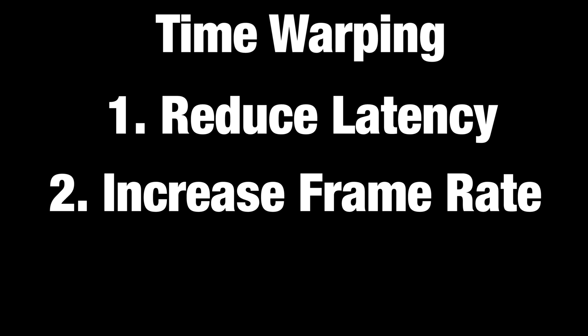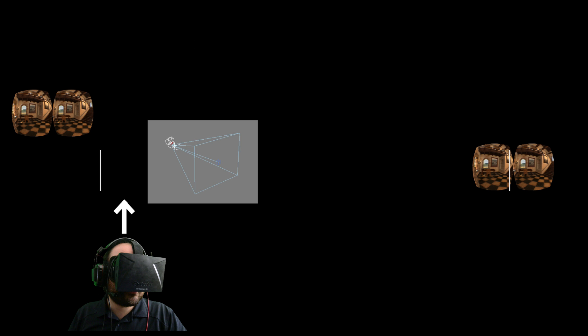Now we know how time warping can decrease latency, but earlier I mentioned you can also use it to increase your frame rate. So how does that work? Suppose that you're only able to get 50 frames a second out of your game engine instead of 60. That means you're taking 20 milliseconds to render every frame. And we want to increase our frame rate to 60 to match the refresh rate of the LCD in the Development Kit 1.